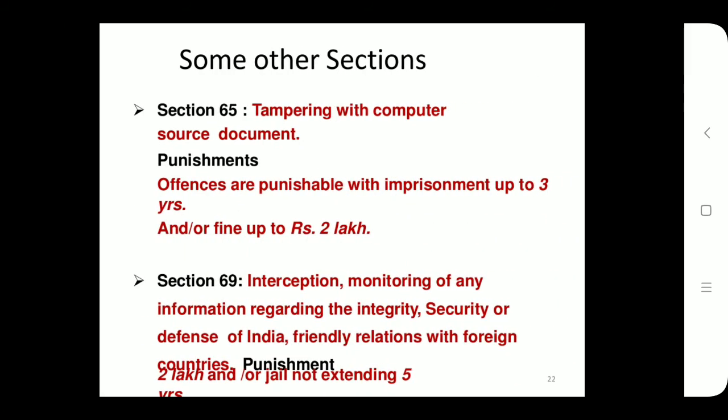Some other important sections include Section 65 and Section 69. Section 65 deals with tampering with computer source documents, and the punishment is imprisonment up to three years or a fine up to two lakhs. Under Section 69, if the conditions are not followed, the punishment is imprisonment up to five years or a fine of two lakhs.